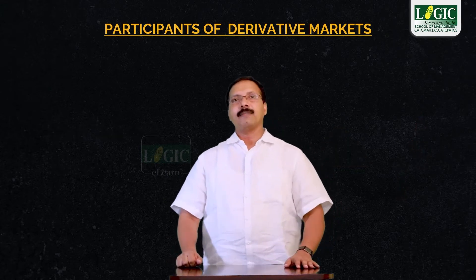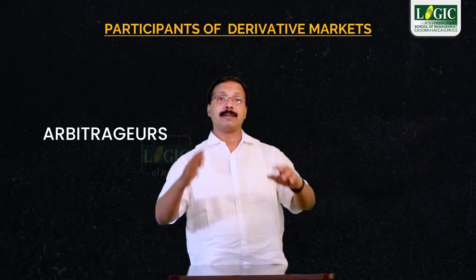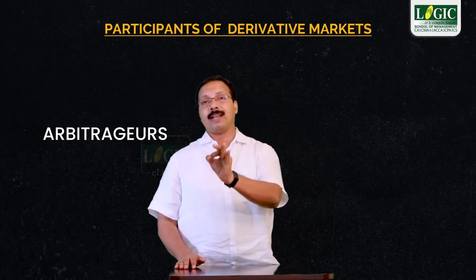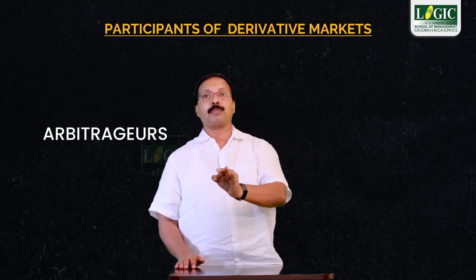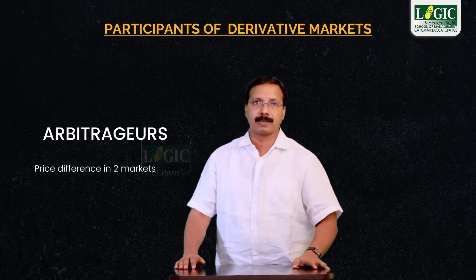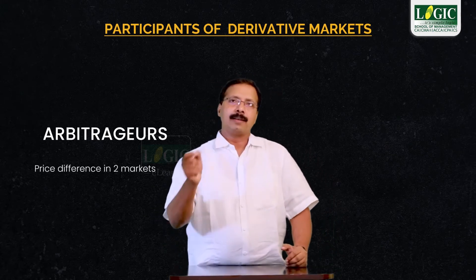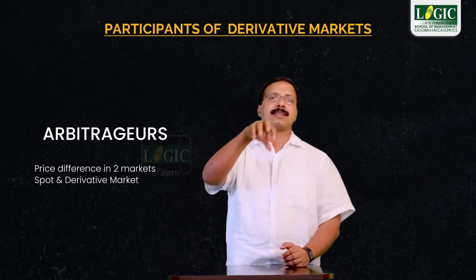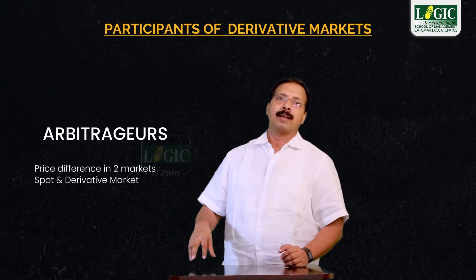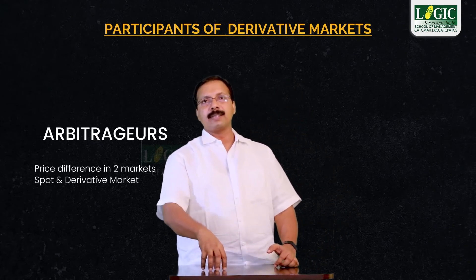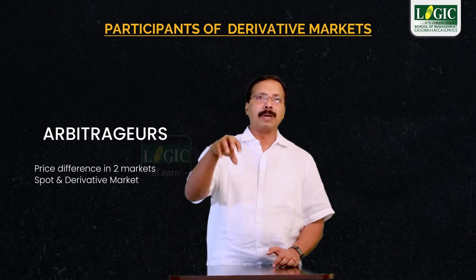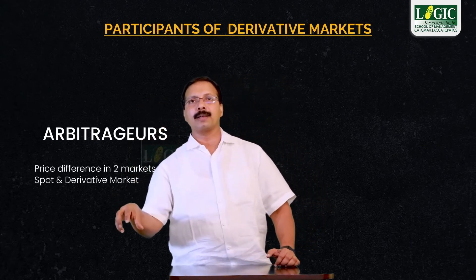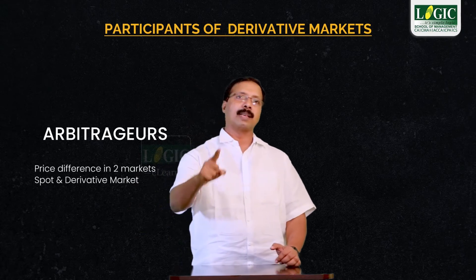Finally, we will see who is an arbitrator. Arbitragers are persons who take advantage of price differences in two different markets — that is the spot market and the derivative market. An arbitrator is the person who makes profit out of the price difference between the spot market and the derivative market.